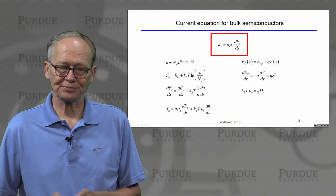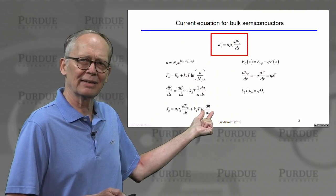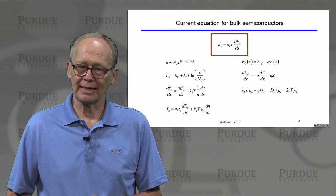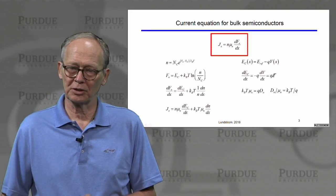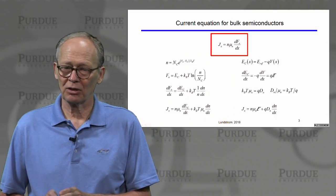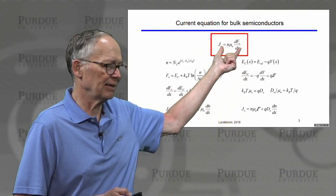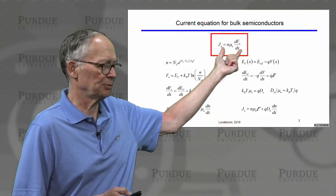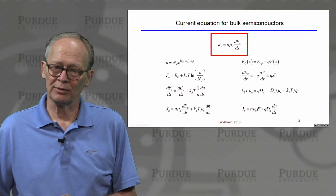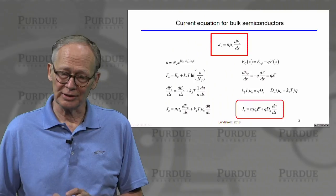I'll also make a definition: kT times μ, which is multiplying a concentration gradient, should be the diffusion coefficient. I get a relation between the diffusion coefficient and the mobility: D/μ = kT/q. That's a relation we've seen before. Putting it all together, I get a current equation known as the drift-diffusion equation. It's mathematically the same as the quasi-Fermi level gradient expression — we have simply pulled it apart into two components: one involving the electric field and one involving the concentration gradient. This is a very important equation because it's widely used in semiconductor devices.